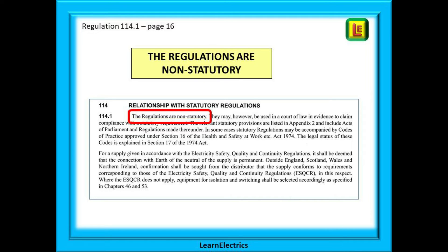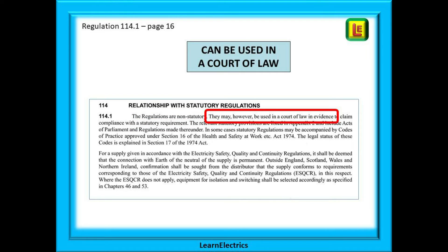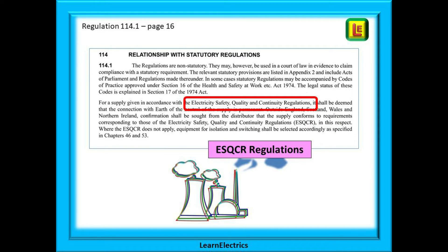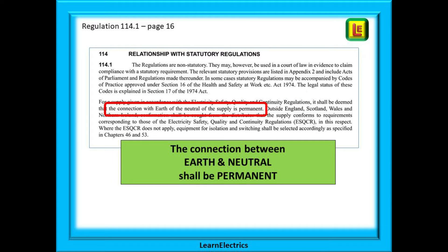Just because it says 'wiring regulations' does not mean they are automatically statutory — they are non-statutory and a code of working practice that we should all abide by. They may, however, be used in a court of law in evidence, because by complying with the non-statutory wiring regulations you will automatically comply with the Electricity at Work Regulations and the Health and Safety at Work Act, which are both enforceable statutory documents. The second paragraph of 114.1 mentions the Electricity Safety Quality and Continuity Regulations, often abbreviated to ESQCR, and also states that the connection with earth and neutral shall be permanent.